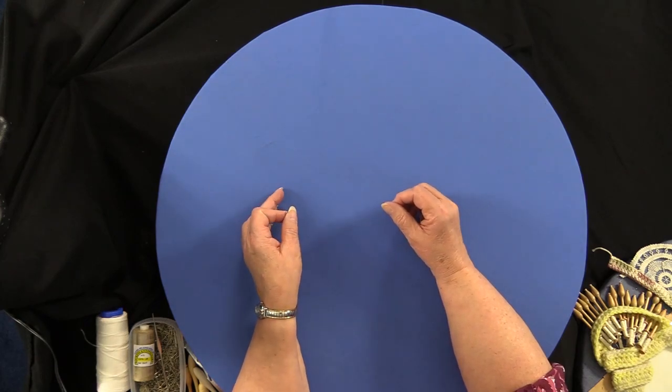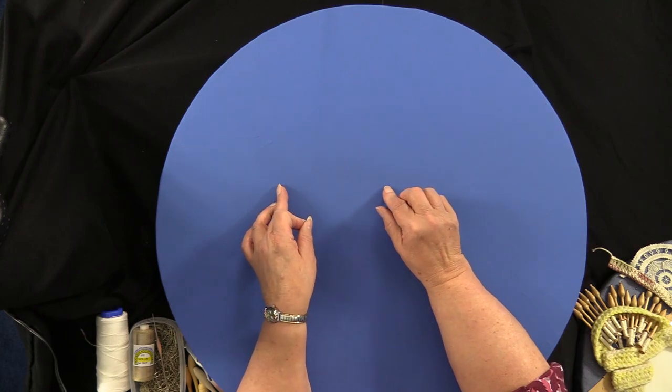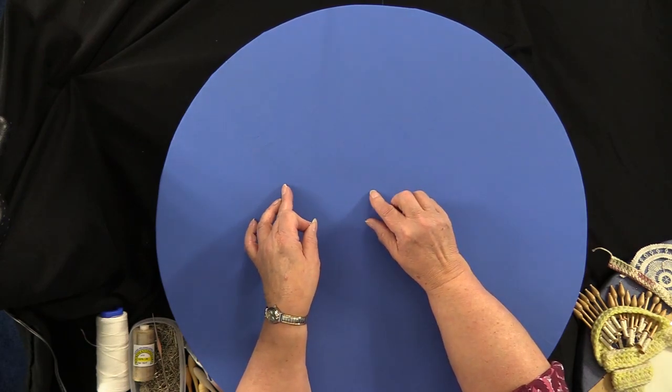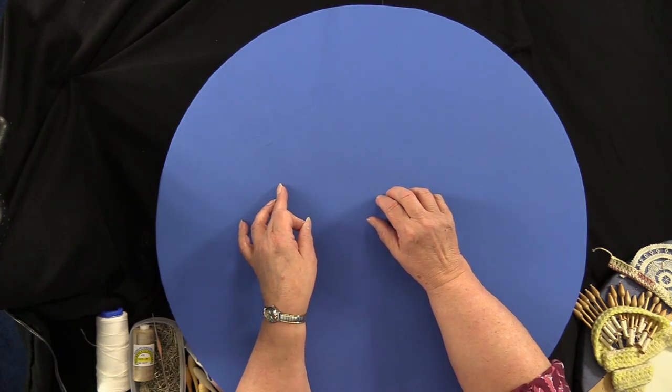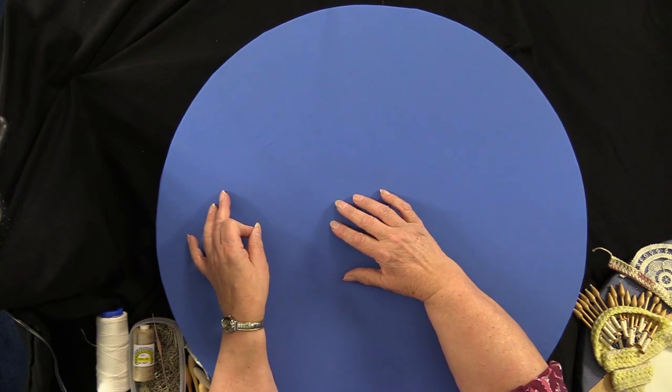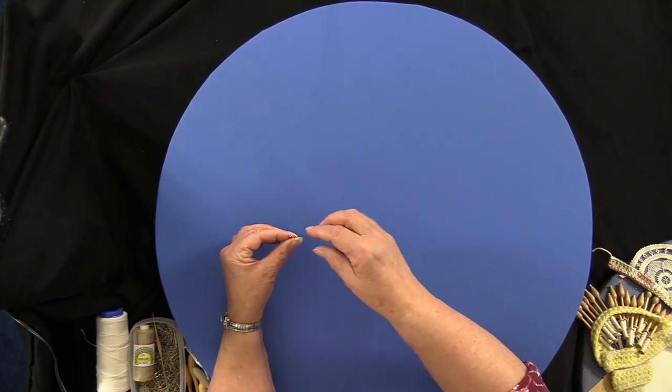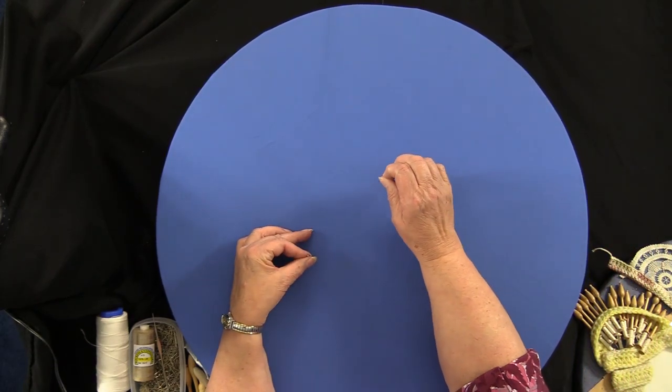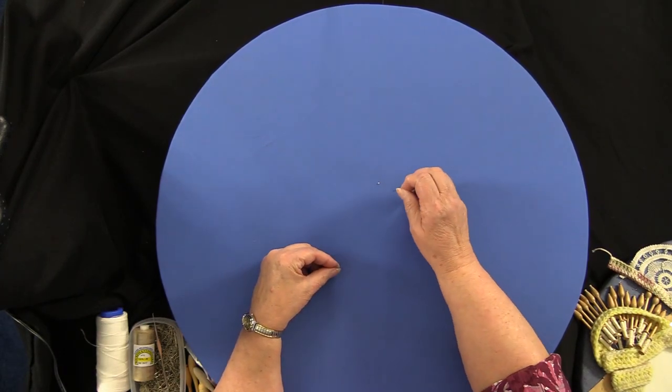Probably the most important thing we're going to talk about right now is your board. A lot of people call these pillows, but we'll refer to them as a board. This board is approximately two inches thick and it's made of a very dense material that is easy to stick your pins in.